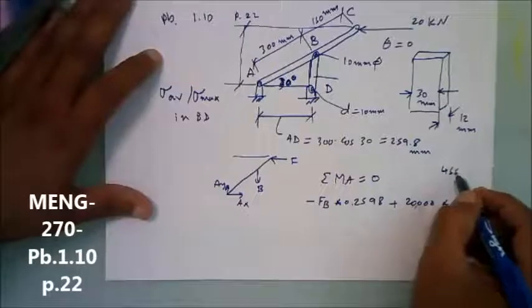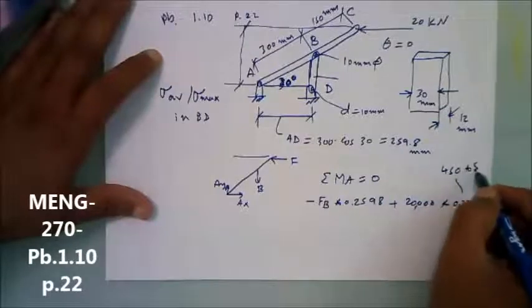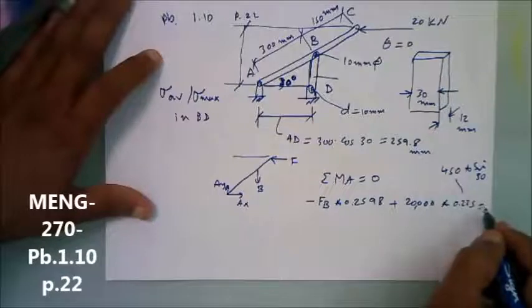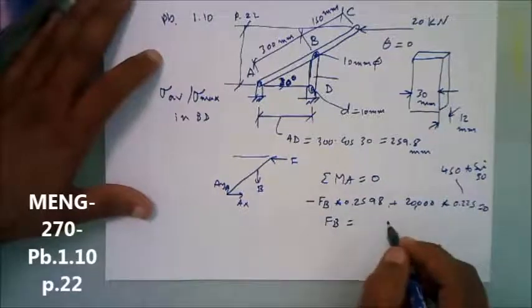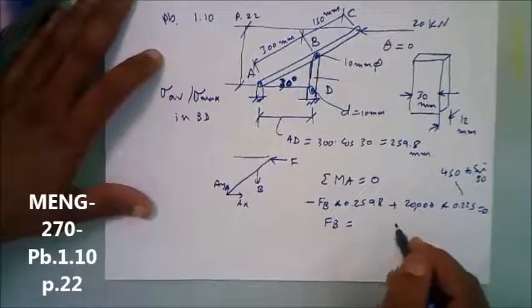Then FB sine 30 equal to zero. Can someone solve FB here?